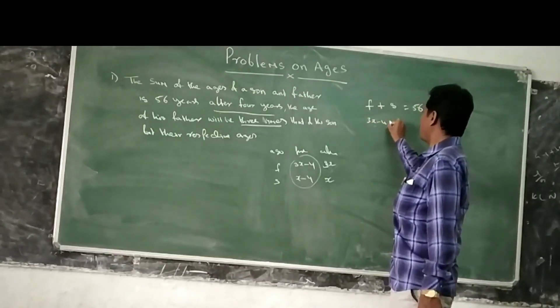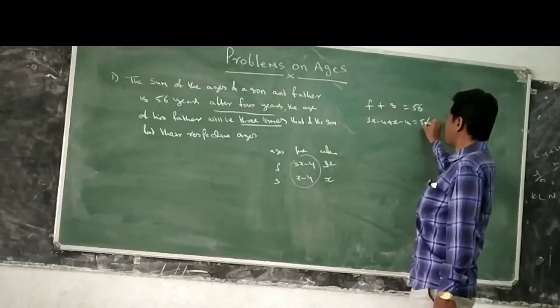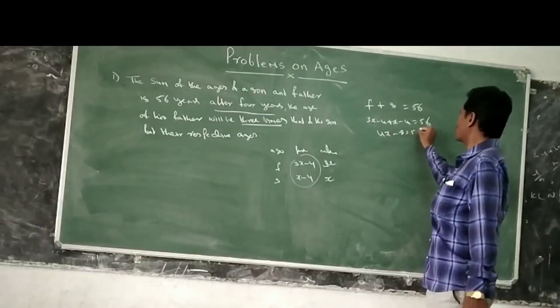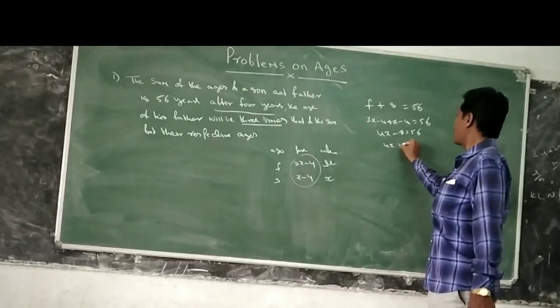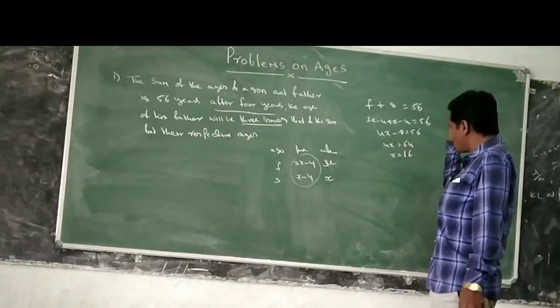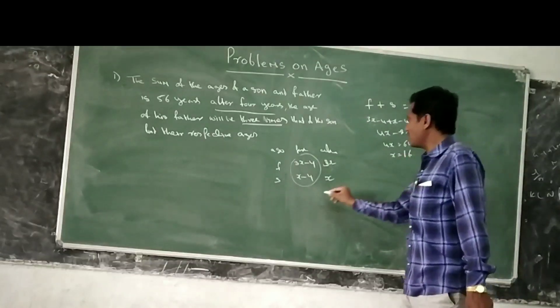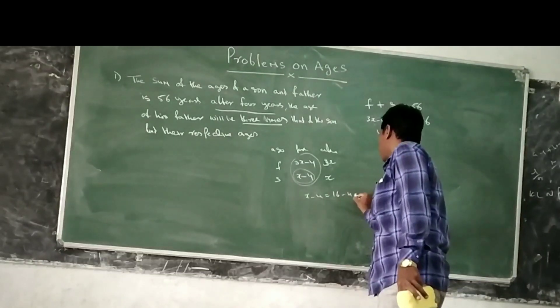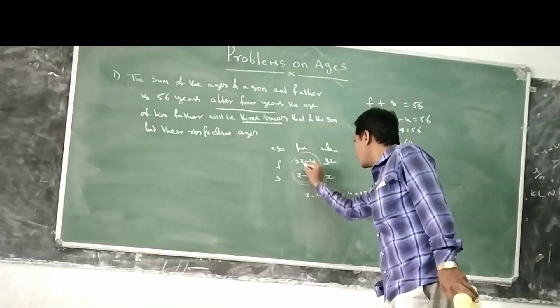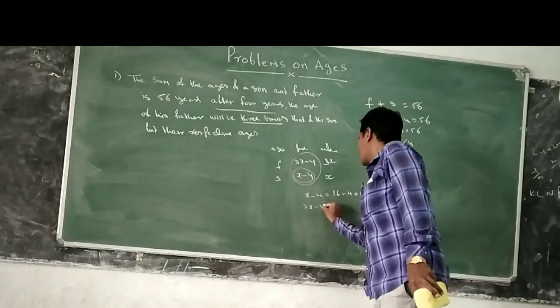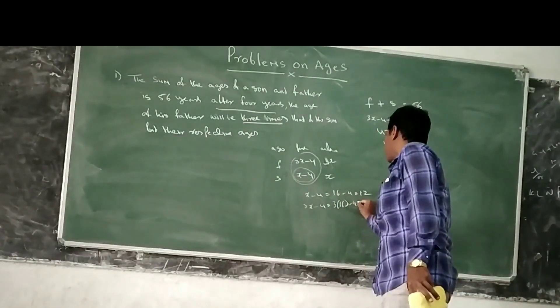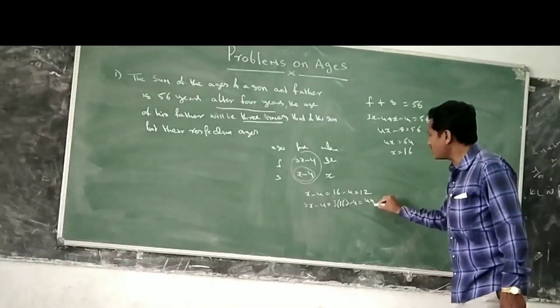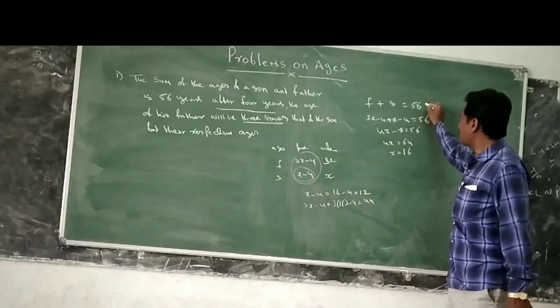3x minus 4 plus x minus 4 equals 56. 4x minus 8 equals 56. 4x equals 64. x equals 16. The present age of their son is x minus 4 means 16 minus 4 equals 12 years. The father is 3x minus 4 means 3 into 16 minus 4 equals 44. When we add these, 12 plus 44, it becomes 56.